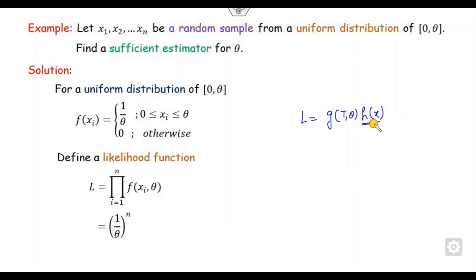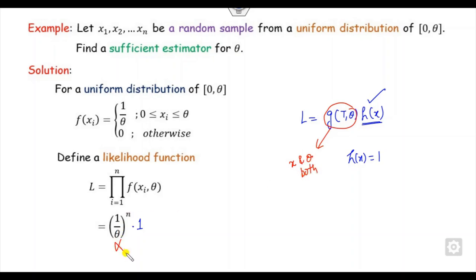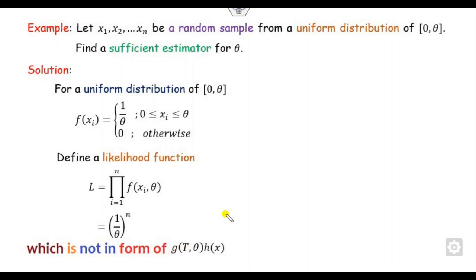Can we write this function in the form required by the factorization theorem? The function h(x) must be totally dependent on x — we can take h(x) = 1. But then g should be a function dependent on both x and theta. However, 1/theta^n is only a function of theta, not of x or T. So the factorization theorem is not applicable here. Once the factorization theorem is not applicable, we apply the Fisher-Newman criteria.